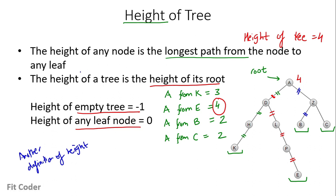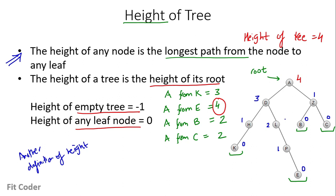We'll use the edge-based definition and calculate the height of each node. Height of K is 0 because it is a leaf node. Mark the height of all leaf nodes as 0. Height of H is 1 because it is 1 edge apart from a leaf node. Height of D is 3 because it is 3 edges apart from E. Height of L is 2. Height of P is 1 and height of Z is 1. Based on this definition, we'll look at the pseudocode for calculating height.